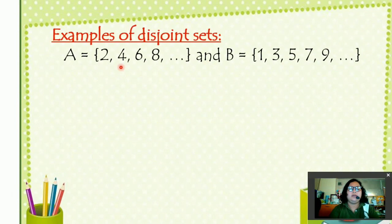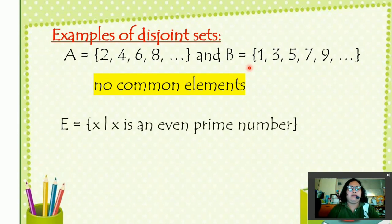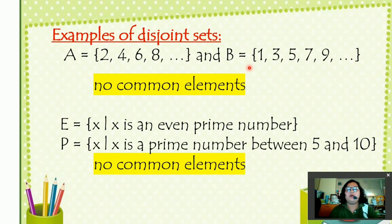Next one. We have here set A with elements of 2, 4, 6, 8, and so on. Set B with elements of 1, 3, 5, 7, and 9. If you notice, set A po natin ay even numbers, while set B is a set of odd numbers. So there is also no common elements. Next, set E is a set of X such that X is an even prime number. And set B is a set of X such that X is a prime number between 5 and 10. Is there any common element? There are no common elements.